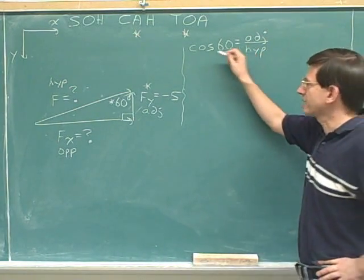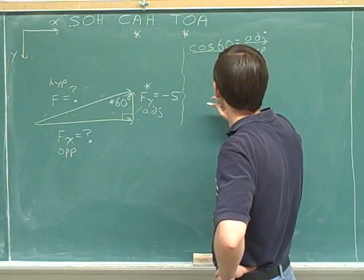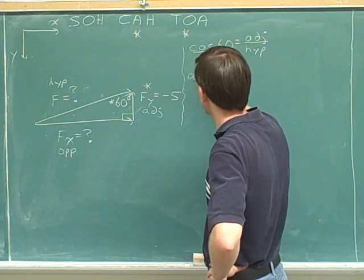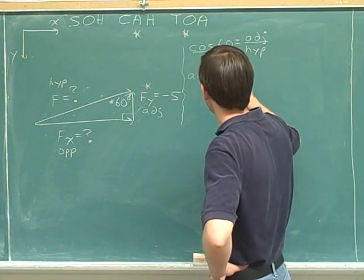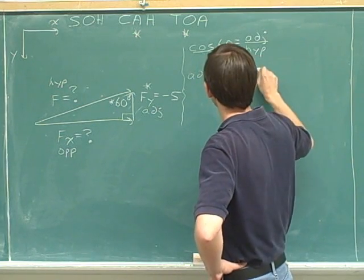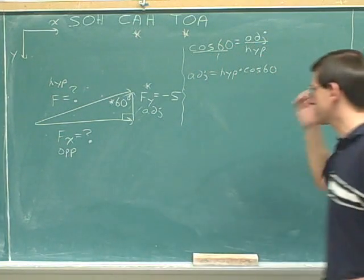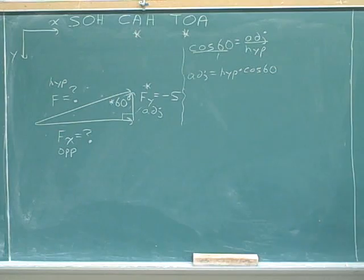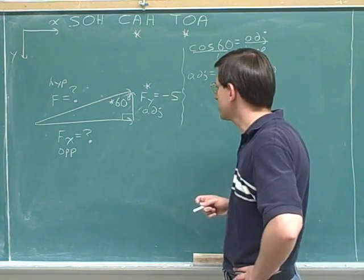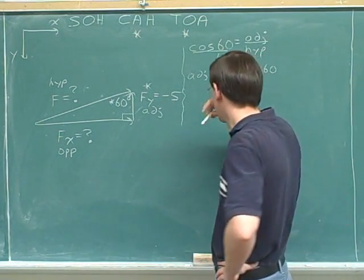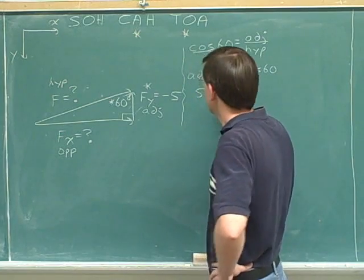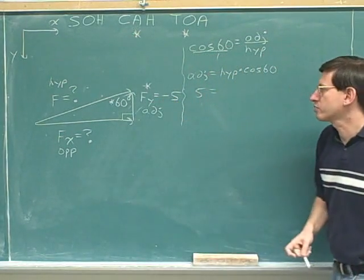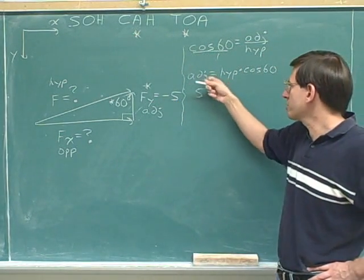Cosine of 60 equals adjacent over hypotenuse. I think I'm going to go ahead and get rid of the fraction here first by cross-multiplying. One times the adjacent side is the adjacent side, and then we have the hypotenuse times the cosine of 60.